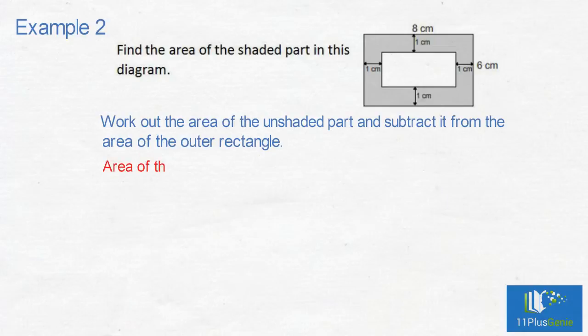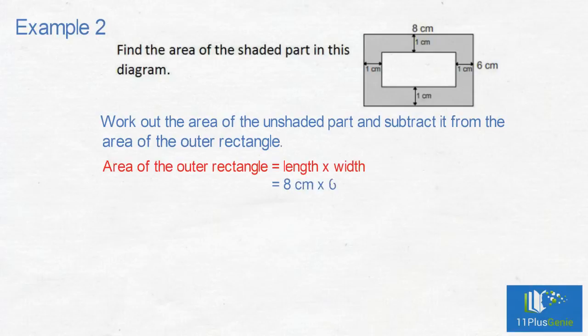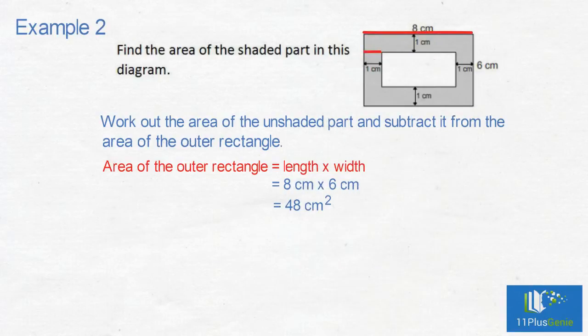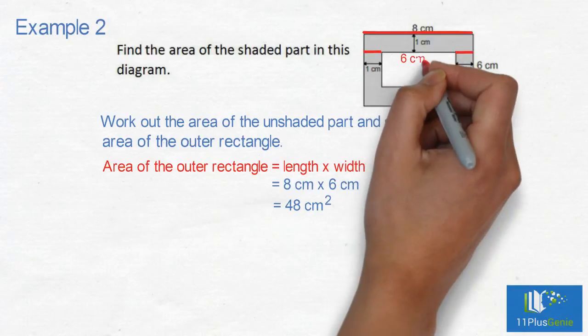Area of the outer rectangle equals length times width, which is 8cm times 6cm, equals 48cm squared. First, find the length and width of the unshaded rectangle. Length equals 8cm, take away 1cm, take away 1cm, which equals 6cm.